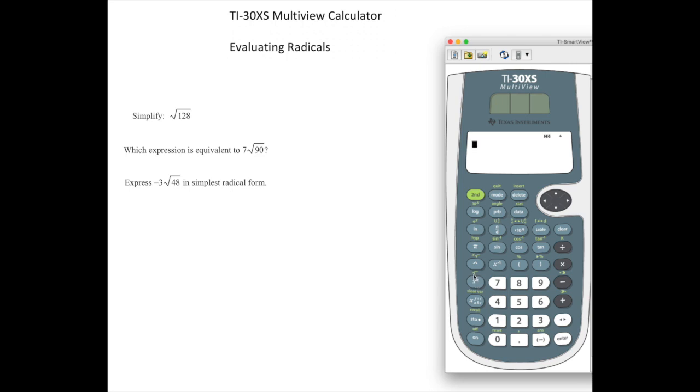Now to access the square root function because it is in green you're going to need the second function button right here. So the second function button actually gives you access to the square root button.